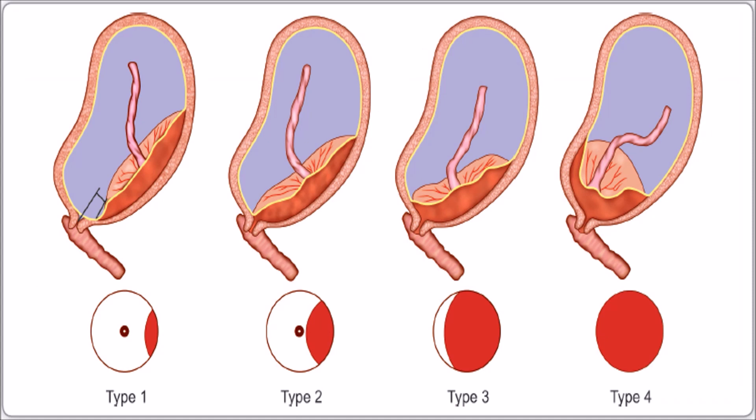In this image we can see the four types of placenta previa: Type 1, Type 2, Type 3, and Type 4. These four types are categorized on the basis of the position of the placenta in the lower uterine segment.